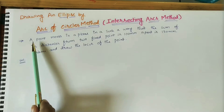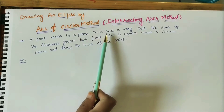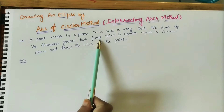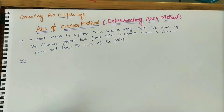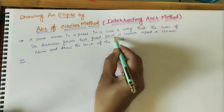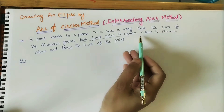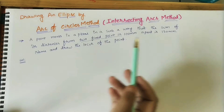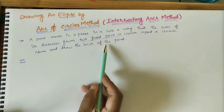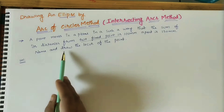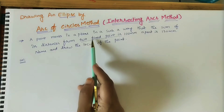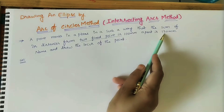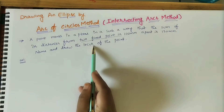According to the problem, a point moves in a plane such that the sum of its distances from two fixed points is 100 mm. The two fixed points are F1 and F2, which are 100 mm apart, and the major axis length is 130 mm. The name of that curve is an ellipse, because the fixed point sum F1 plus F2 equals 100 and the major axis distance is given.